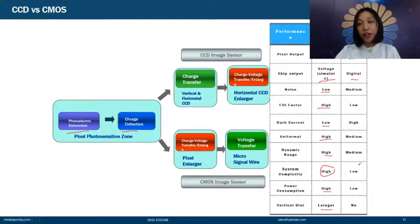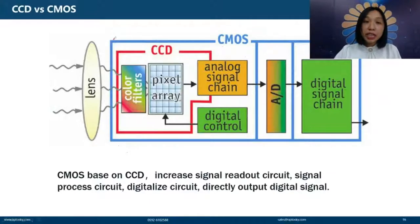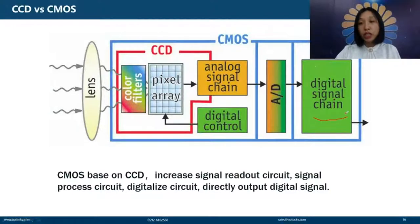CMOS has advantages over CCD in system simplicity, power consumption, and size. CMOS is based on CCD technology but adds signal readout circuits at each pixel, enabling digital signal output internally. So CCD exports analog charge while CMOS exports digital voltage — CMOS effectively digitizes the signal within the sensor.